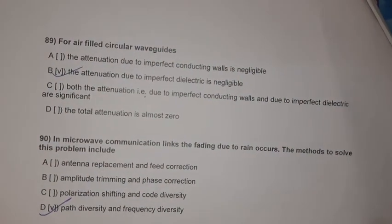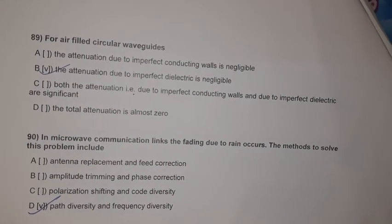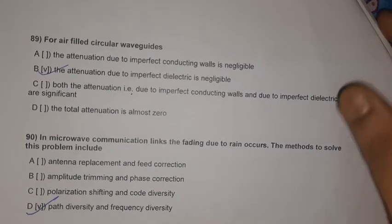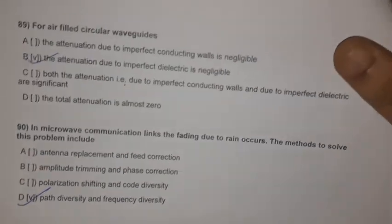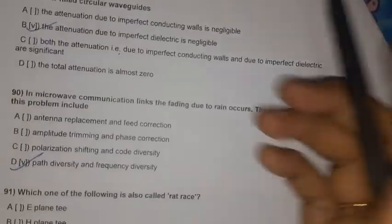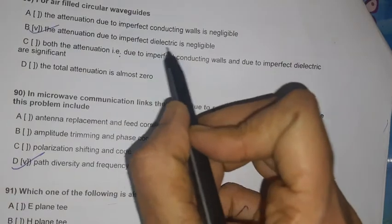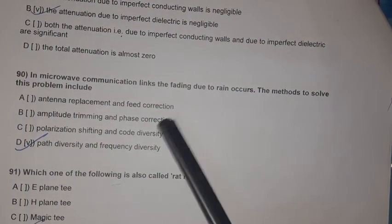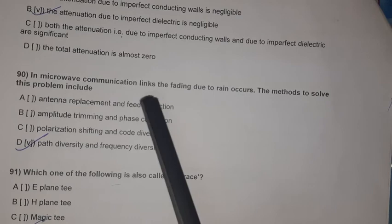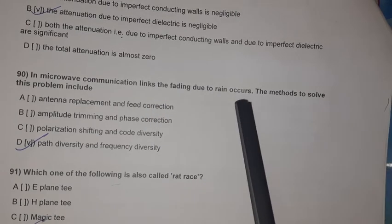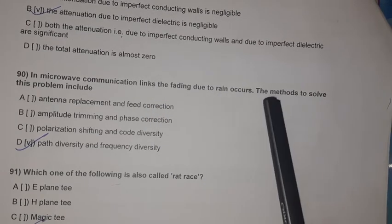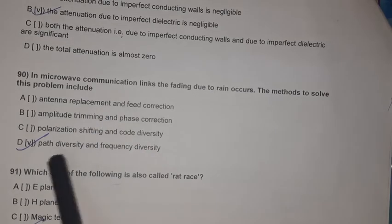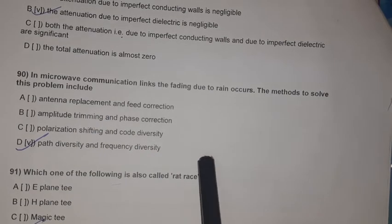Question 87: For an air-filled circular waveguide, the attenuation due to imperfect dielectric is negligible. Question 88: In microwave communication links, fading due to rain can be addressed by path diversity and frequency diversity.